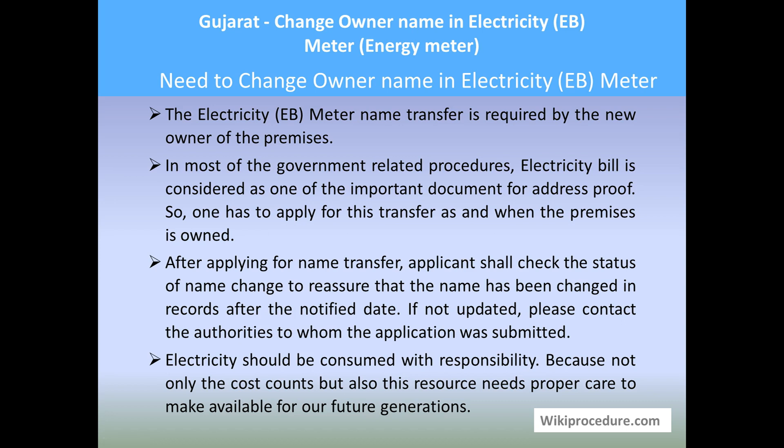After applying for the name transfer, the applicant has to check the updates constantly. If it is not happening on the given timeline, then he has to go to the office where he applied, query them why it is not happening, and make the change as soon as possible. Electricity is an important resource which needs to be used responsibly so that it will be available for our future generation.